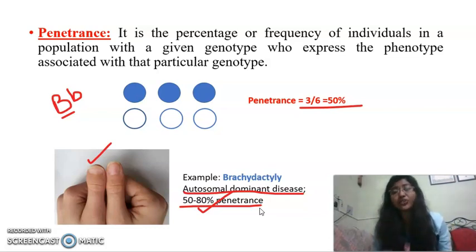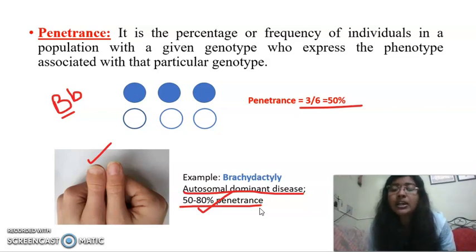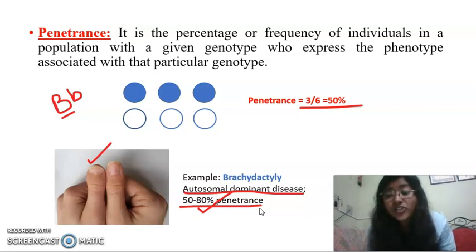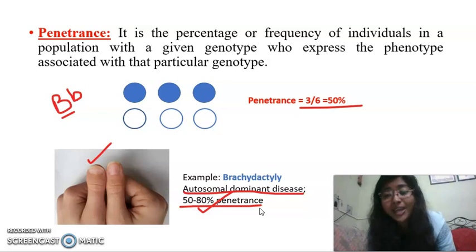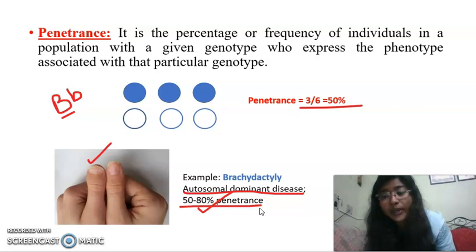So why does this incomplete penetrance occur? There can be genetic causes like epistasis, or the presence of some kind of modifier genes or repressors near your genes, which inhibit your genes from being expressed and from forming the associated protein needed for the phenotype to be expressed. Or it may also be due to environmental factors.